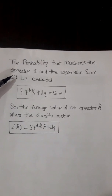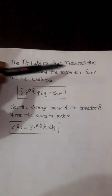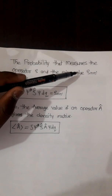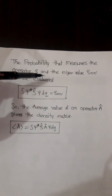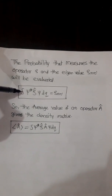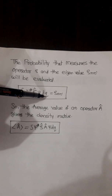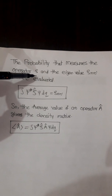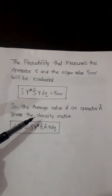The probability that measures the operator rho (ρ) with eigenvalue ρₙₙ' is evaluated as: ∫ ψ* ρ̂ ψ dq = ρₙₙ'. This is the probability that we measure operator ρ with eigenvalue ρₙₙ'.